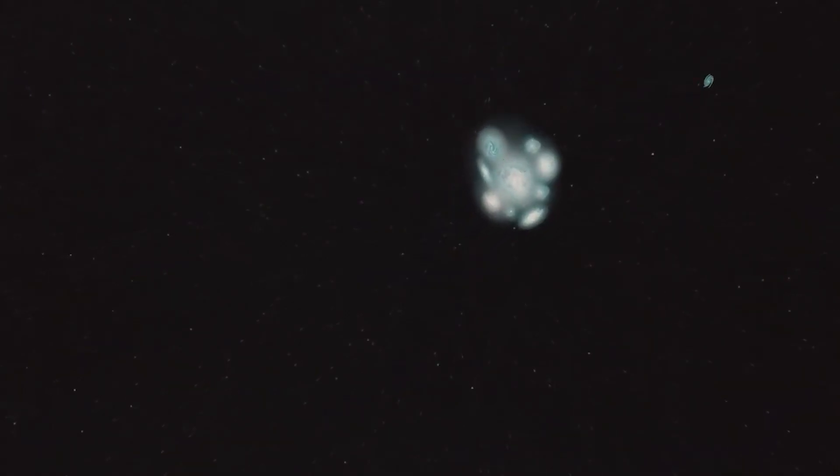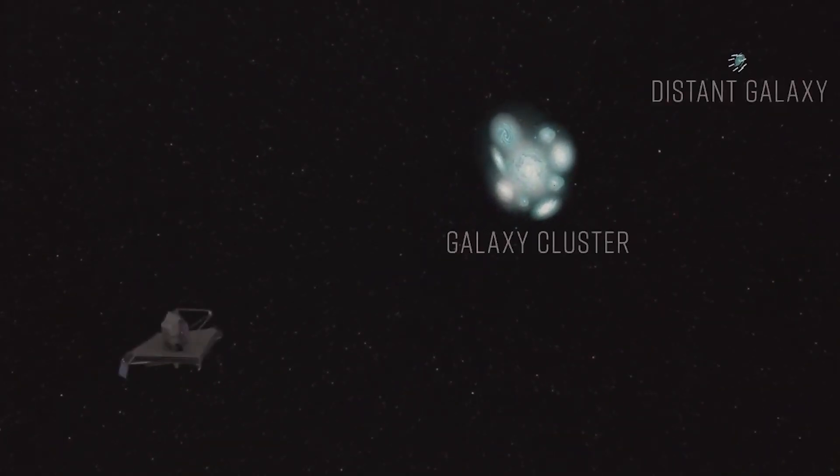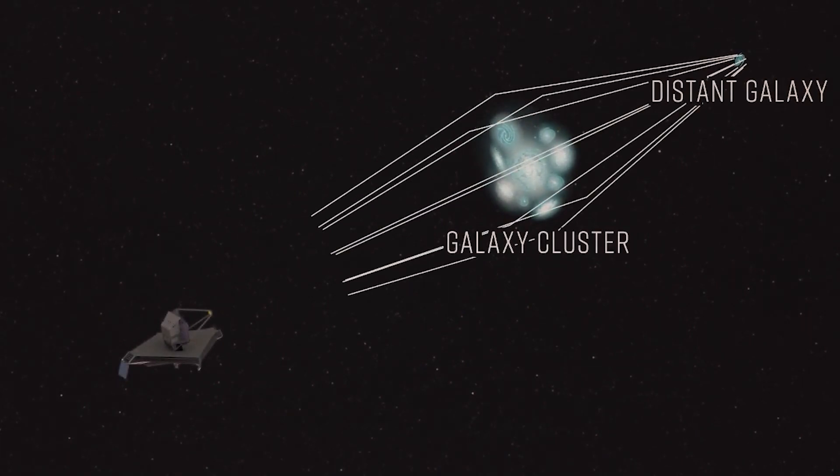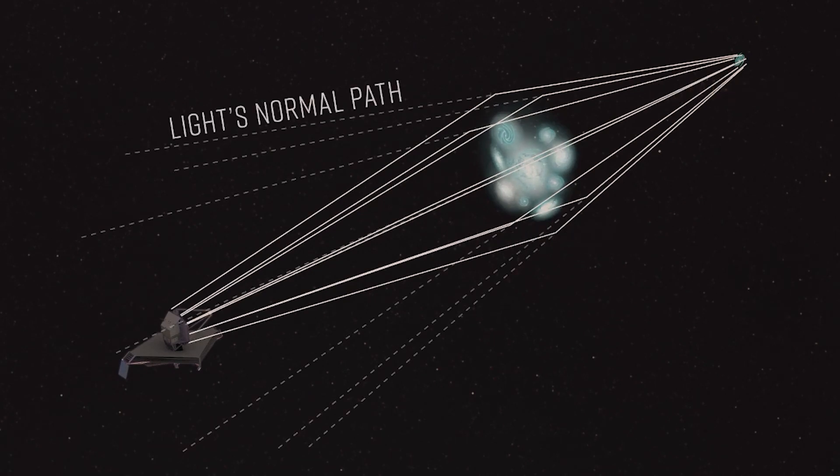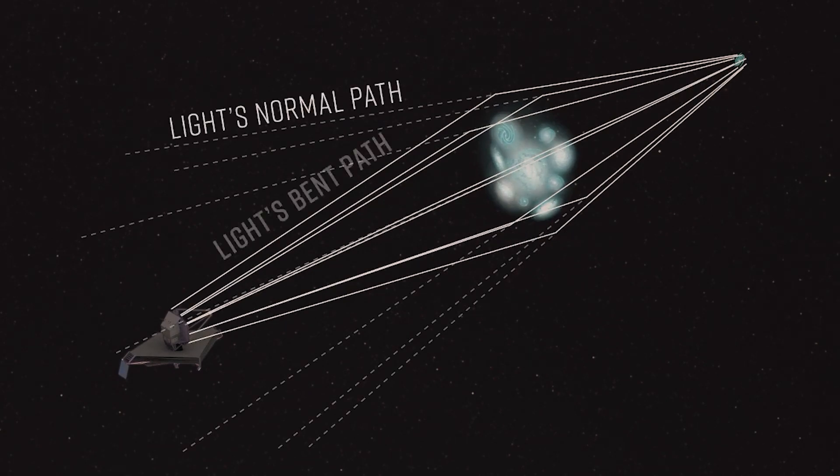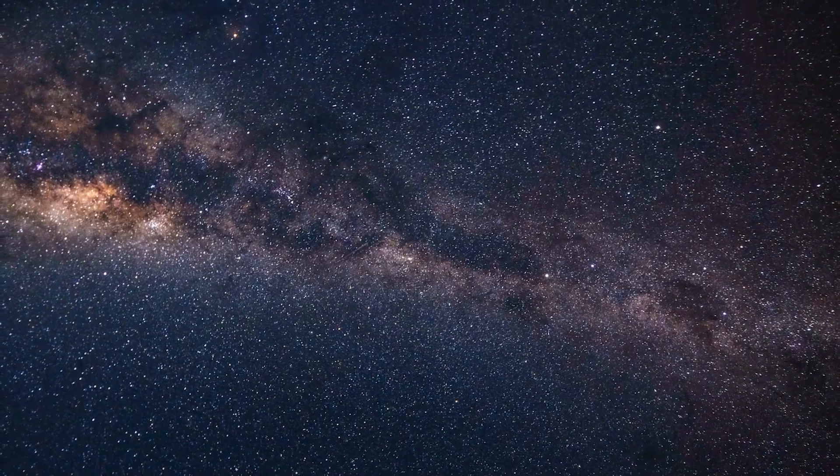Because of JWST's immense power, it can observe an entire galaxy cluster at once. The scientists use these photographs to identify the little galaxy using a process known as gravitational lensing, which happens when mass bends and magnifies light. The distance between Earth and this little galaxy was then calculated by the study's authors using spectroscopy.